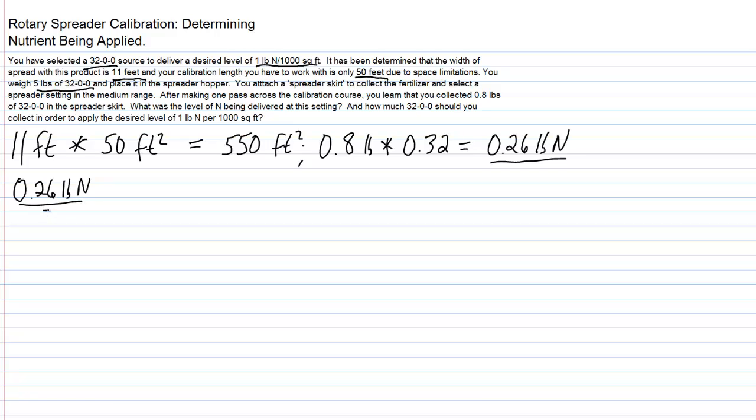Now let's do some proportioning because we've got other information in our problem that we can use. 0.26 pounds of nitrogen is being applied to 550 square feet, correct - that's our calibration area that we just determined. Let's proportion that out to how much x pounds of nitrogen would that be on a thousand square foot basis, the units that we work most frequently with in these types of problems.